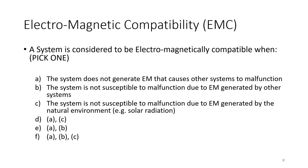A system is considered to be electromagnetically compatible when — pick one of the following: A, the system does not generate EM that causes other systems to malfunction; B, the system is not susceptible to malfunction due to EM generated by other systems; C, the system is not susceptible to malfunction due to EM generated by the natural environment. The correct answer is F — all of A, B, and C. When developing and deploying a system, you want to make sure your system isn't impacted by electromagnetic radiation, but also that you don't generate enough radiation to affect adjacent systems.